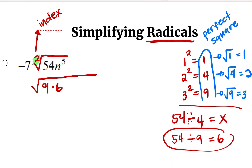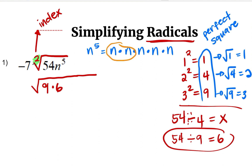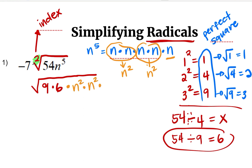Then n to the fifth can be expanded into n times n times n times n times n. And we are going to find groups of two because the index is two. So this is one group, and this is another group. We can write this as n squared, which is one group; this one is n squared; and this one is a remainder. So we bring down n squared, n squared, and the remainder n.